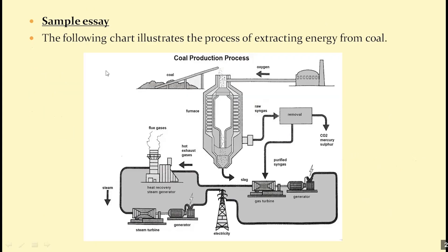Here is an example: the following chart illustrates the process of extracting energy from coal. Take some time first — write an introduction paraphrasing the question, then an overall paragraph counting the steps, and then write the body paragraphs. If it's one continuous process, write one long paragraph. If you can divide it into two parts, write two body paragraphs. I'll show you a model answer after.